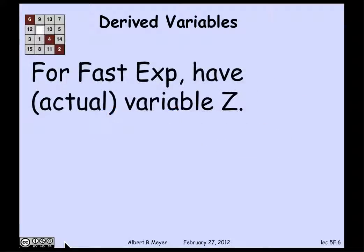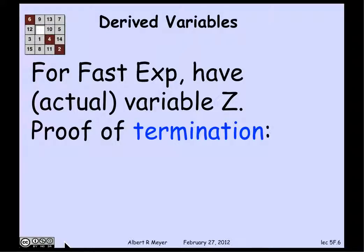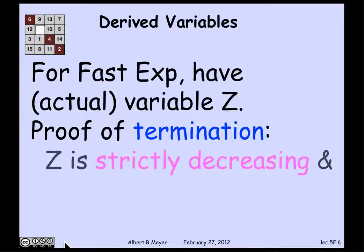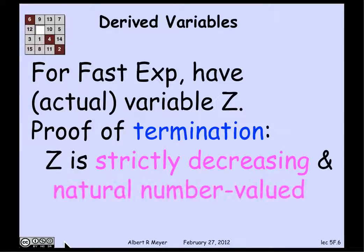In the case of fast exponentiation, we looked at the actual variable z, which was part of the invariant and a crucial part of the program. What we noticed about z was that z was a strictly decreasing and natural number valued variable. As a matter of fact, we noticed that it halved at each step, but its values were non-negative integers, and it's strictly decreasing at every step.